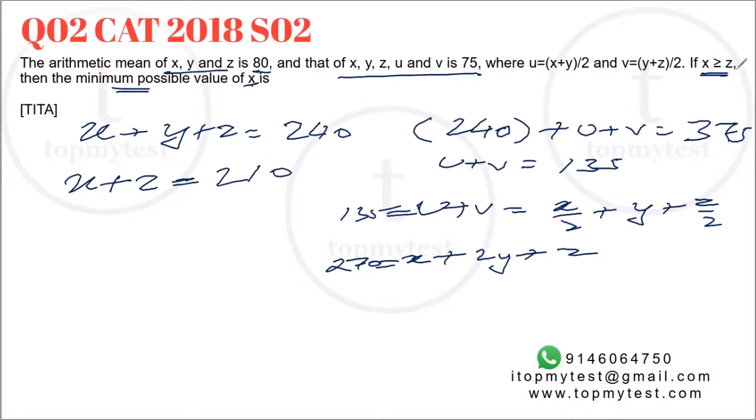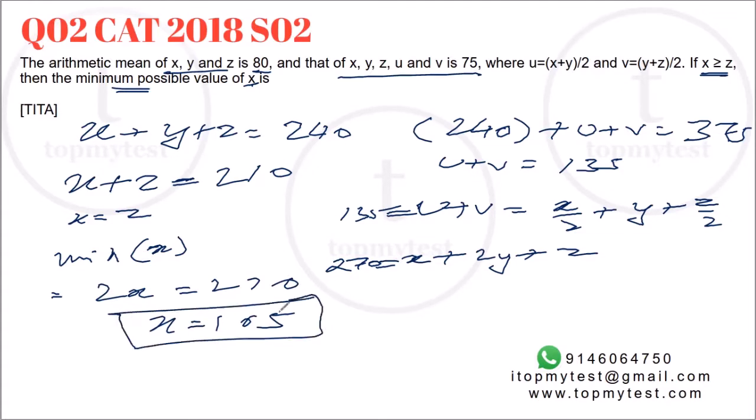Now, what is the boundary value? x has to be greater than equal to z. So if I need to minimize the value of x, I can put x equals z. So the minimum value will happen when x will be equal to z. So minimum value of x will be 2x equals 210 or x equals 105. This will be our final answer. Again, under two minutes to solve.